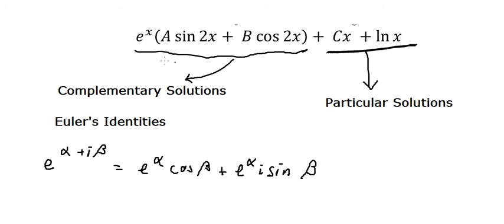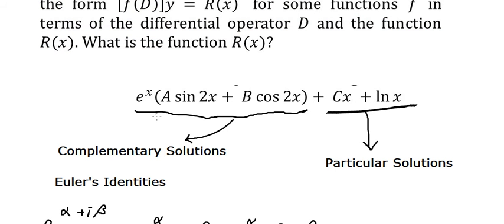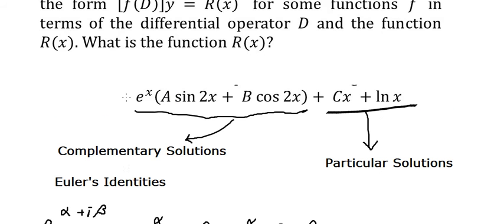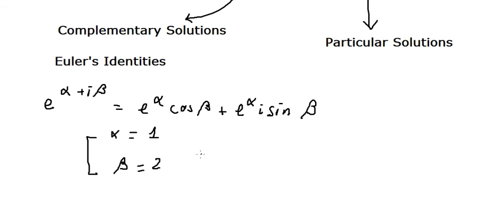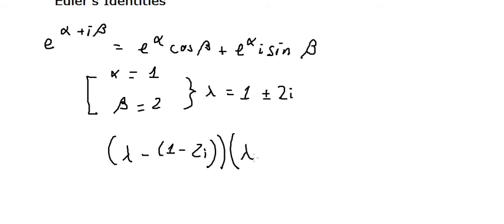We can convert these into two solutions. Alpha is number one and beta in this situation is number two. In the complementary solution we have two solutions, so that means we have lambda equals 1 plus and 1 minus 2i.